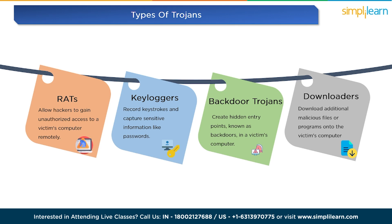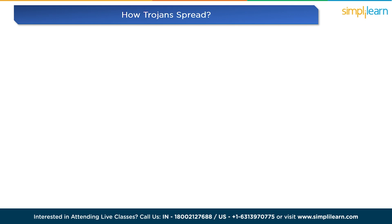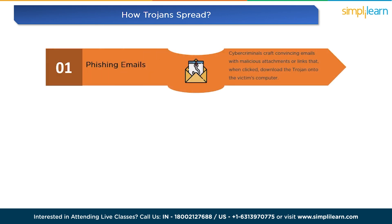You might be wondering how Trojans spread in the first place. The first method is phishing emails, one of the most common ways Trojans infiltrate systems. Cyber criminals craft convincing emails with malicious attachments or links that, when clicked, download the Trojan onto the victim's computer.